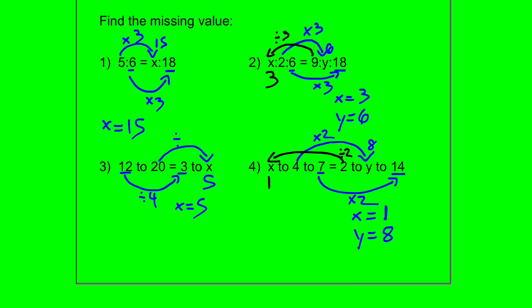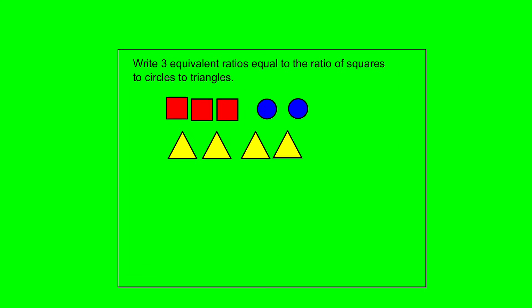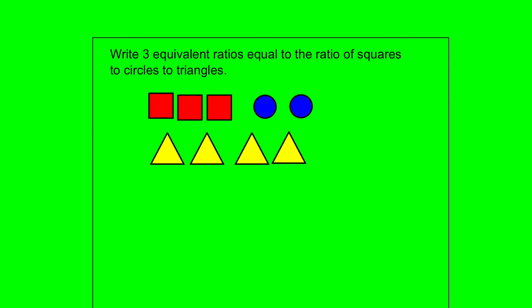That's how you use equivalent ratios to find missing values. This question asks us to write 3 equivalent ratios equal to the ratio of squares to circles to triangles. We have 3 squares, 2 circles, and 4 triangles, so that ratio is 3 to 2 to 4.